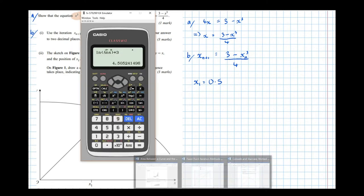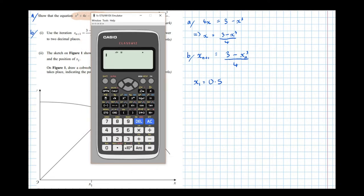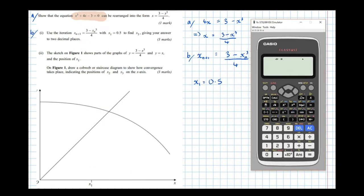So getting the calculator, first of all, we're going to store 0.5 in our answer button. So 0.5 equals, so now type in the right hand side, so we've got a fraction, 3, take, answer cubed, over 4.